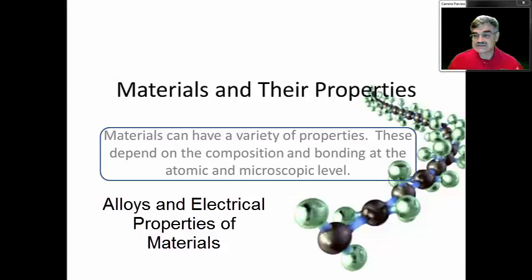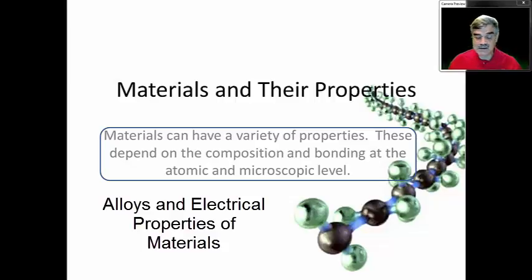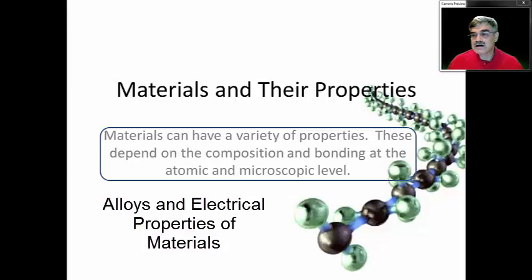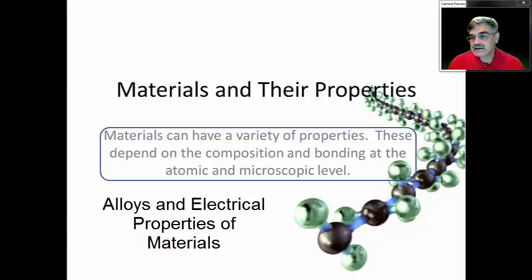Physical properties include such things as the ability to conduct electricity or conduct heat, as well as magnetic and optical properties. Chemical properties include such things as inflammability, resistance to corrosion, and resistance to water. We then talked about some composite materials, such as plywood, reinforced concrete, and fabric composites. We also introduced a modern type of composite material — metal matrix composites — which are very strong and lightweight.